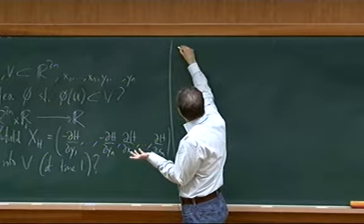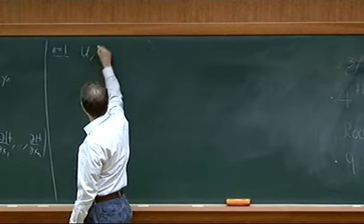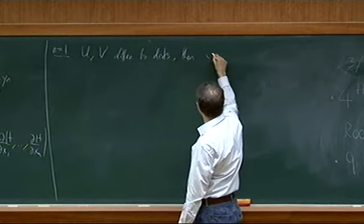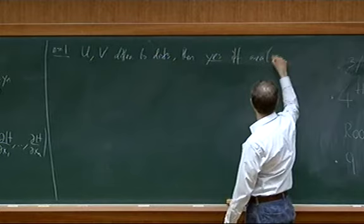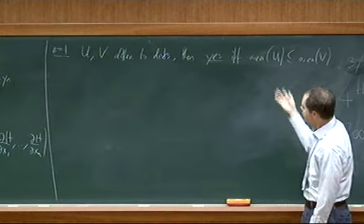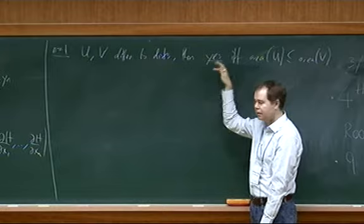You can solve this if n equals one. At least let's say U and V are diffeomorphic to disks. Then the answer is yes if and only if the area condition is satisfied. So at least in dimension two, area completely solves this question — I suppose that's due to Moser.